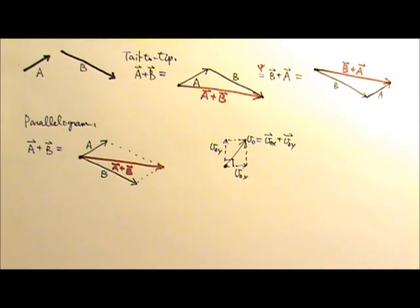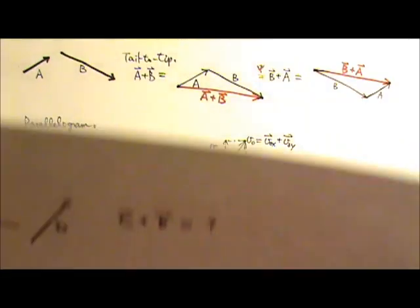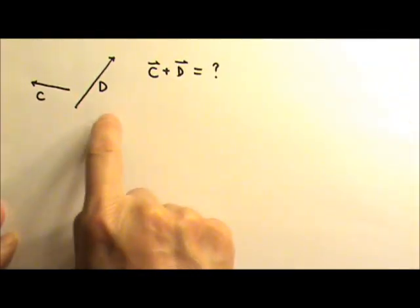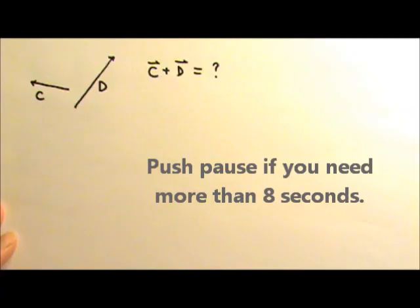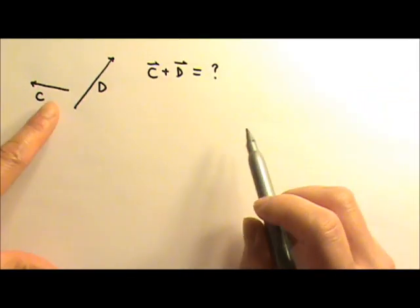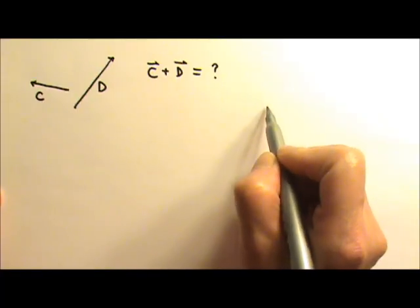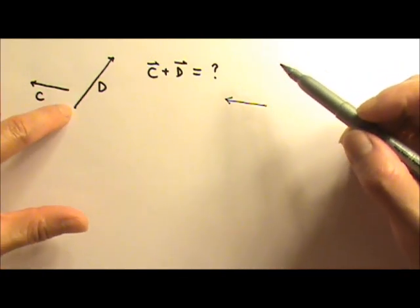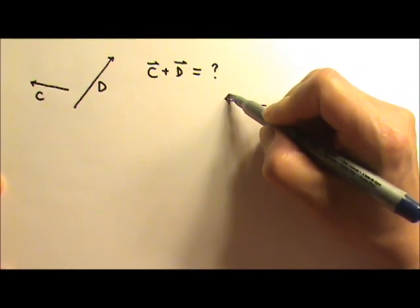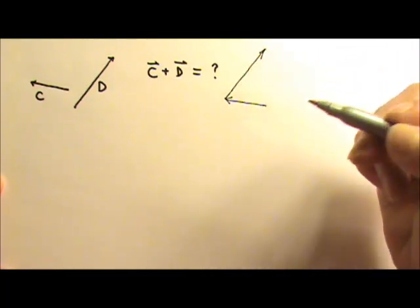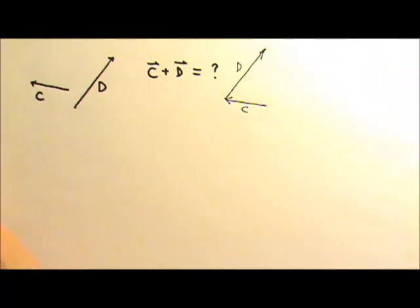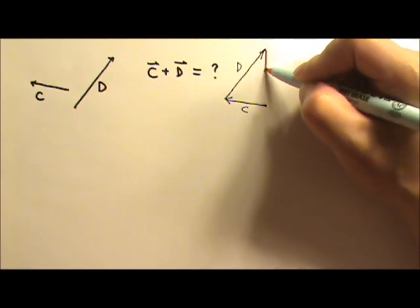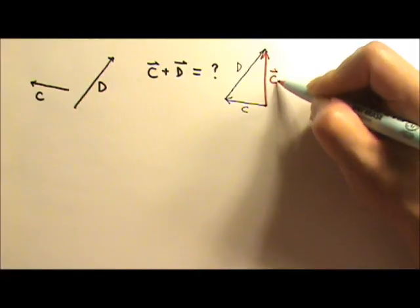Before we go on to the third method, let's try another example. We have two vectors C and D — see if you can find C plus D. We first copy down vector C, then put the tail of D at the tip of C. This is C, this is D. We started here and ended there, so that is the sum C plus D.